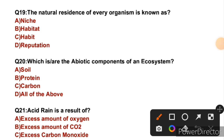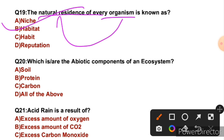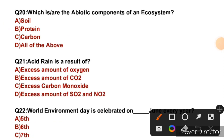Question 19: The natural residence of every organism is known as — the natural residence of an organism is called its habitat. So the right answer is B. Question 20: Which are the abiotic components of an ecosystem? Among the options, soil, protein, and carbon are all abiotic components. So the right answer is D, that is all of the above.